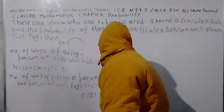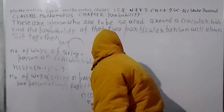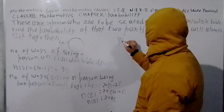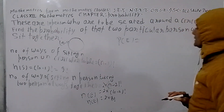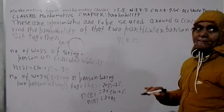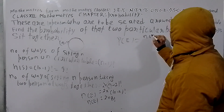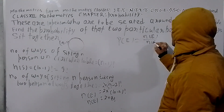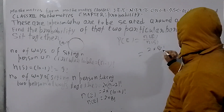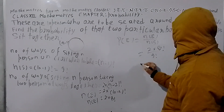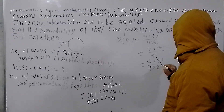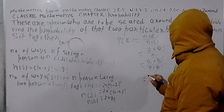Number of favorable events upon number of sample events. Probability of two persons always together equals NE upon NS, which is 2 into 8 factorial upon 9 factorial. Since 9 factorial equals 9 into 8 factorial, they cancel, giving the answer 2 upon 9.